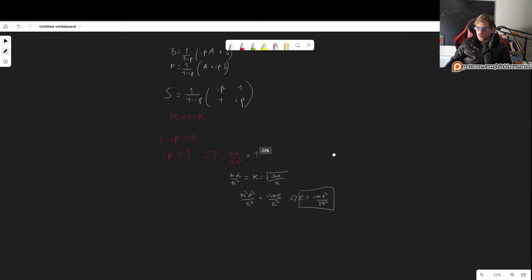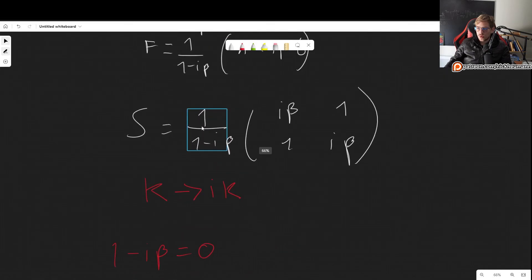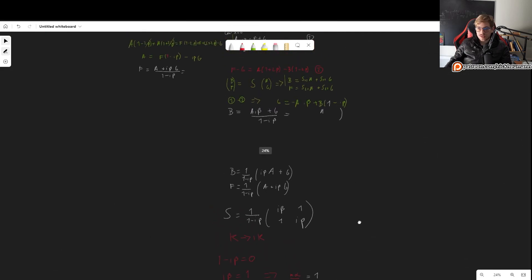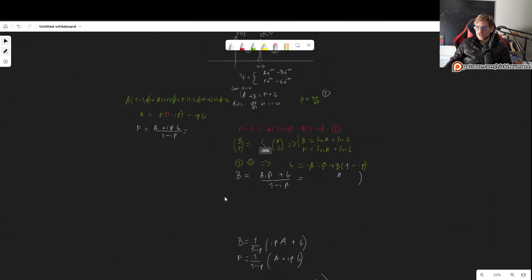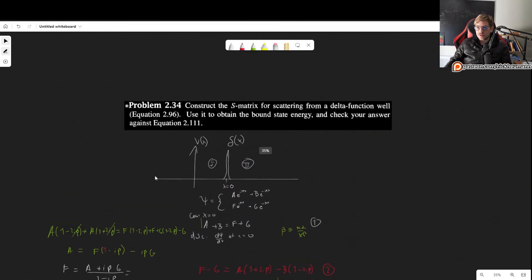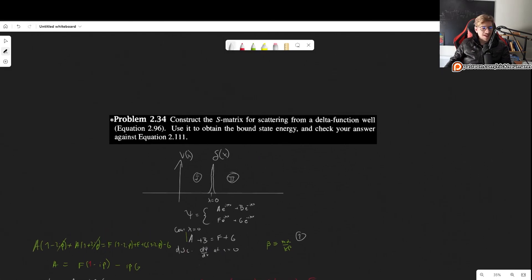So knowing this scattering matrix is very, very useful because it can, as we have seen, tell us a lot about the bound states and it can tell us a lot about the reflection and transmission coefficients in a very simple manner. So there we go. That is the solution to problem 2.34. I hope this was useful to you. If it was, please make sure to leave a comment, like the video and subscribe, and maybe consider checking out my Patreon. So I'll see you in the next video. Thank you very much for watching.